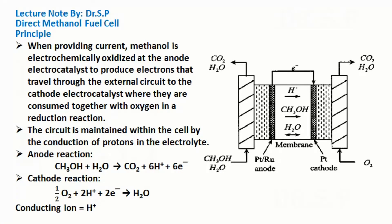Principle: When providing current, methanol is electrochemically oxidized at the anode electrocatalyst to produce electrons that travel through the external circuit to the cathode electrocatalyst, where they are consumed together with oxygen in a reduction reaction. The circuit is maintained within the cell by the conduction of protons in the electrolyte. At the anode there is oxidation and at the cathode there is reduction. The conducting ions in this cell are hydrogen ions, simply H+ ions.